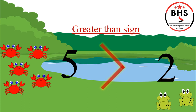We will read the numbers from left to right. It is read as 5 is greater than 2. Children, always remember: when the crocodile's mouth will open to the left hand side, it will be called as the greater than sign.